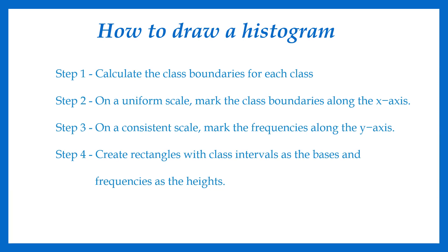When creating a histogram, in the first step we should calculate the class boundaries for each class. Secondly, on a uniform scale, we should mark the class boundaries on the x-axis. Third, on a consistent scale, we should mark the frequencies on the y-axis. Finally, we can create the rectangles with the class intervals as the base and frequencies as the height.